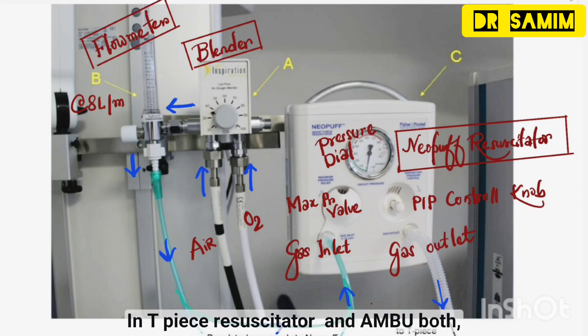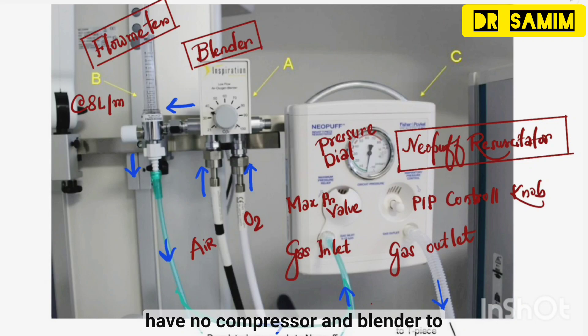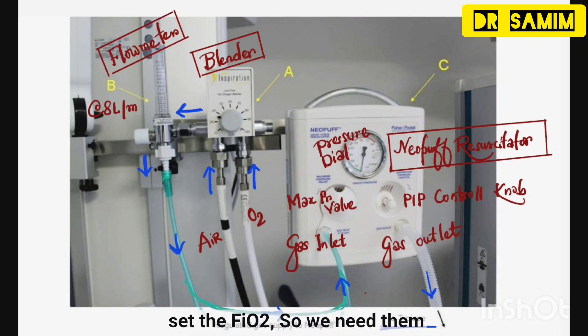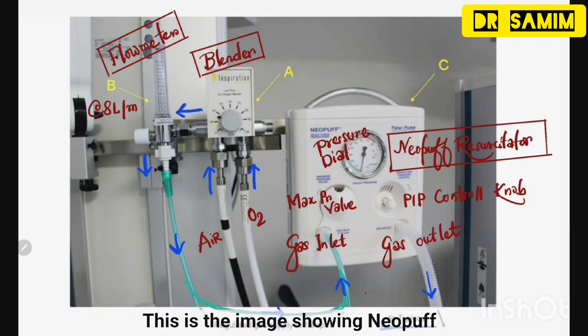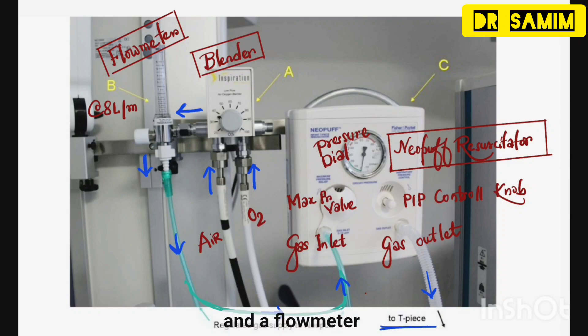Both the TPS resuscitator and AMBU have no compressor or blender to set the FiO2, so we need them separately. This image shows the TPS resuscitator, blender, and a flow meter.